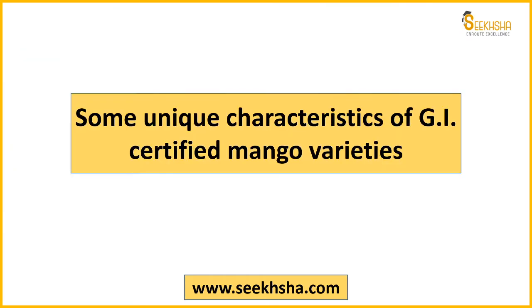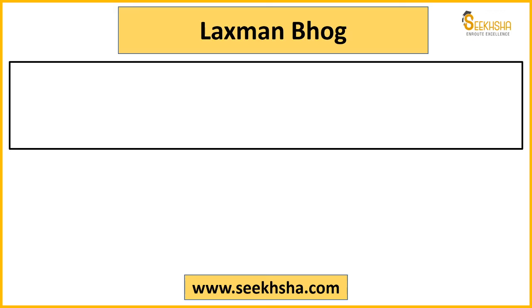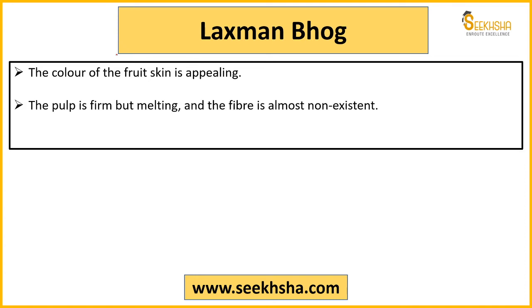Now let's discuss some unique characteristics of these GI varieties, starting with Lakshman Bhog. Lakshman Bhog is known for its fruit color - it is quite appealing, with a yellow base and light reddish shades visible in the color. Its pulp is firm and strong.